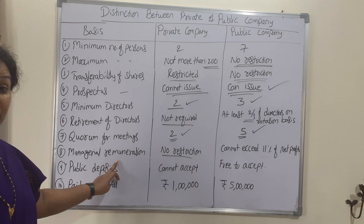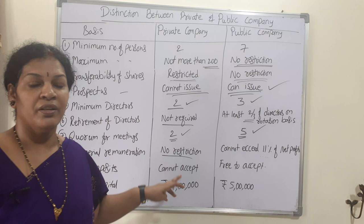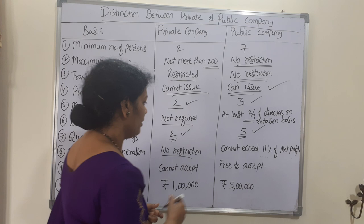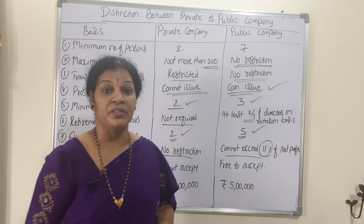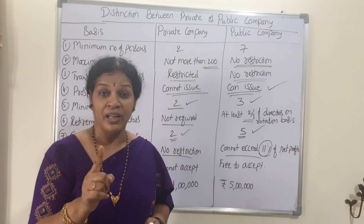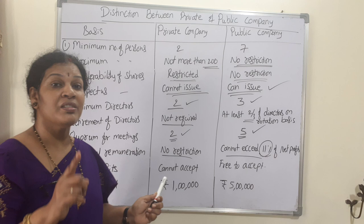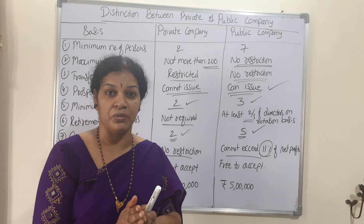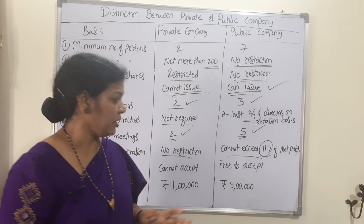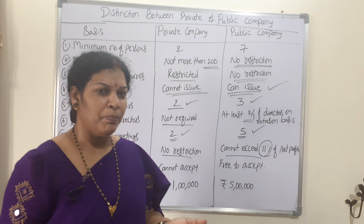Next is managerial remuneration. In a private company there is no restriction — management can decide how much remuneration they want, and no specific amount is set by the government. In a public company, managerial remuneration cannot exceed eleven percent of net profits. For example, if net profit is one lakh rupees, eleven percent is eleven thousand, so the directors' remuneration must not exceed eleven thousand.